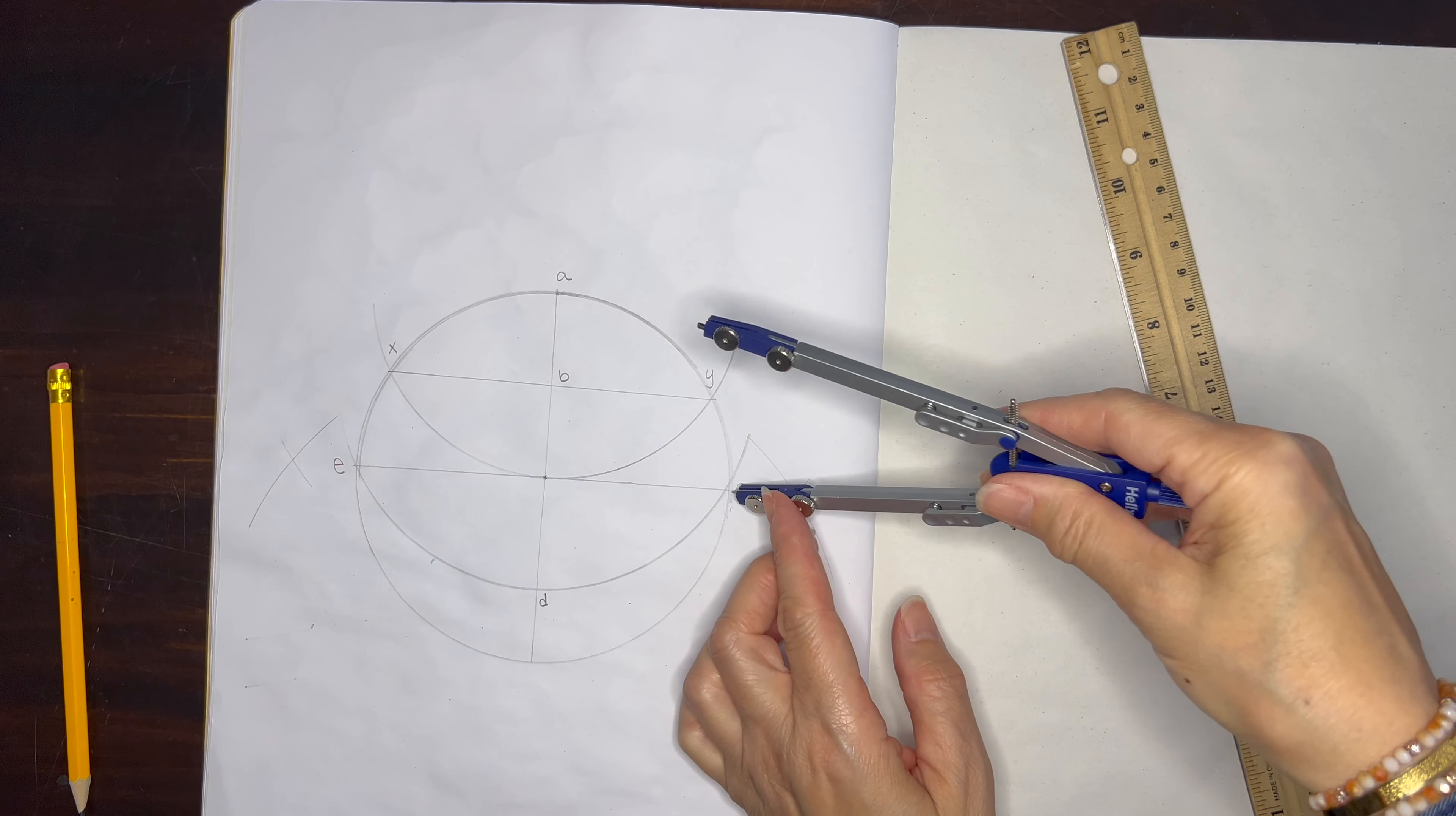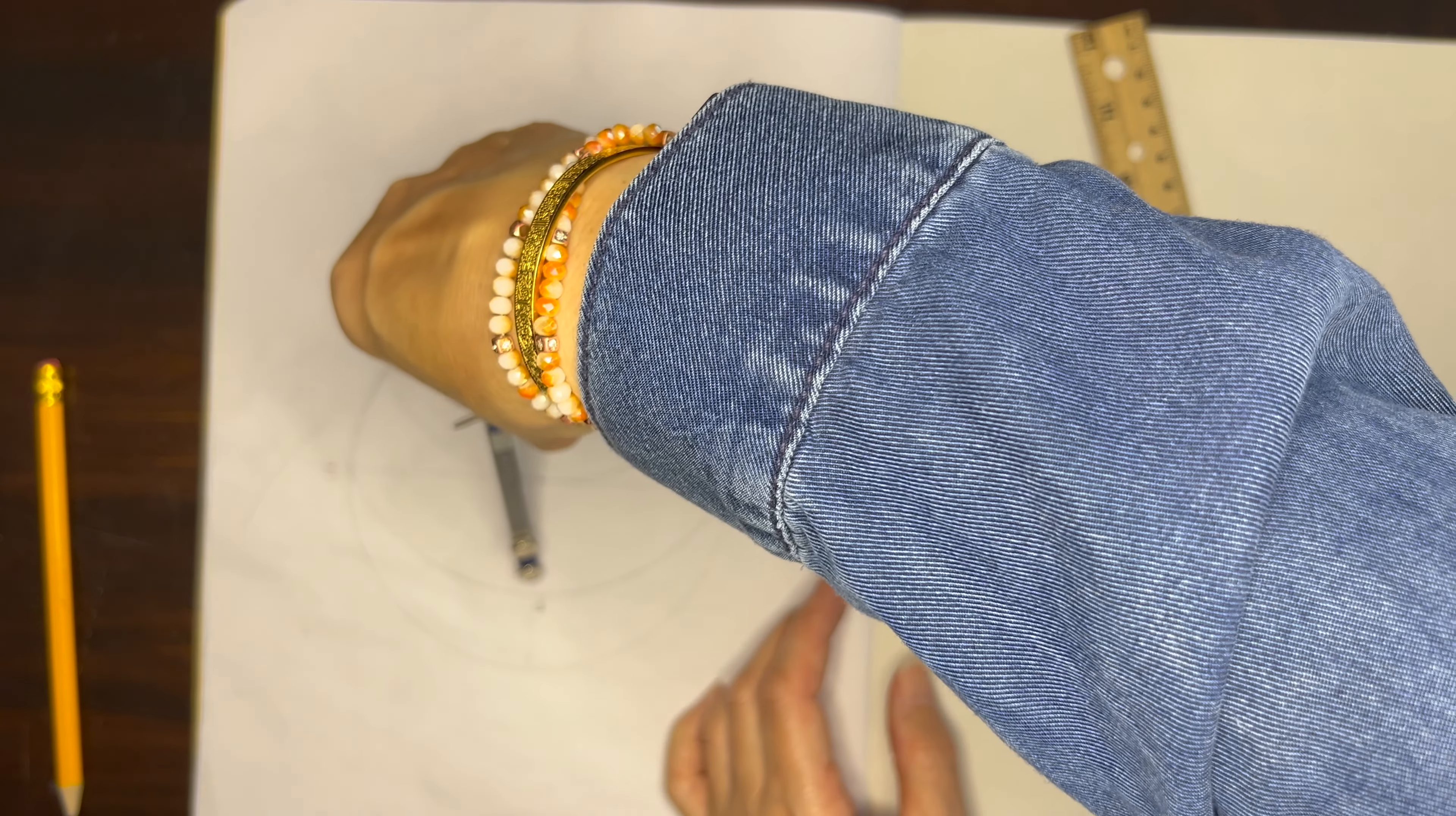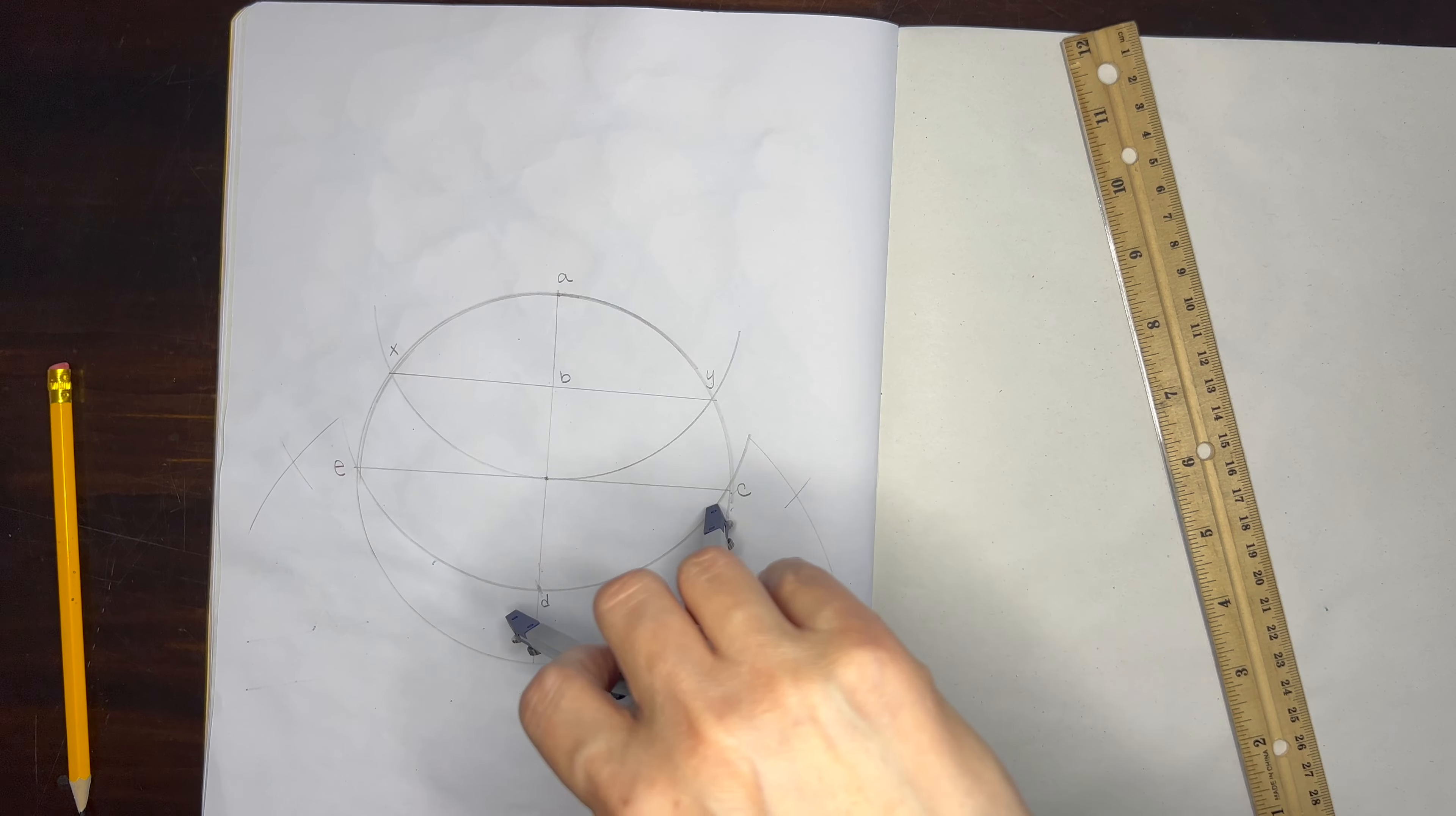Now we want to set our compass from point C to point D and that is actually going to be one fifth of the circle. So I'm going to spend a little time making sure that it is accurate and now we can do our five division of a circle.